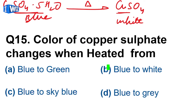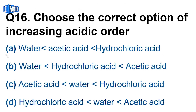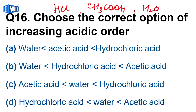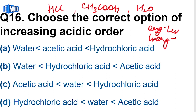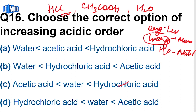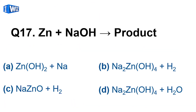Question number 16: choose the correct increasing order of acidity. We have hydrochloric acid (HCl), acetic acid (CH₃COOH), and water. Organic acids are less acidic; inorganic acids are more acidic. Water is neutral. So the increasing order is: water < acetic acid < HCl. The answer is option A.